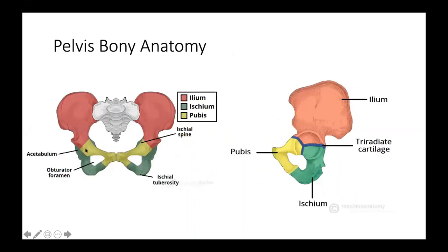On the socket side, which is part of the pelvis, the socket is called the acetabulum. The pelvis is formed by three bones: the ilium, the ischium, and the pubis, which meets at the pubic symphysis. In the back, you have the sacrum, which is part of the spine. In children, a cartilage called the tri-radiate cartilage separates these bones, and as they mature, it fuses to form one continuous bony unit.